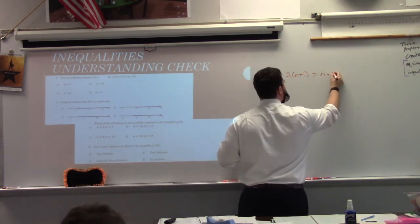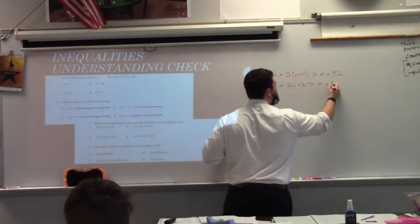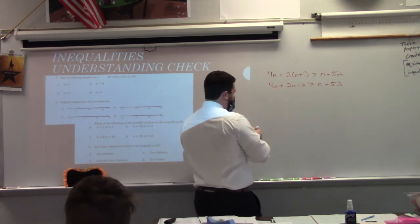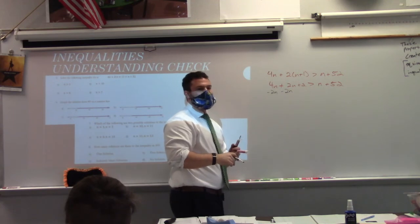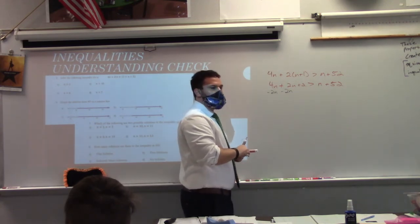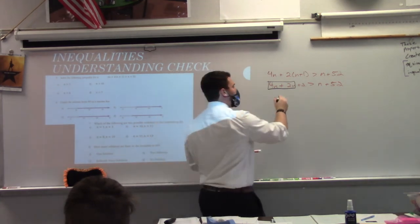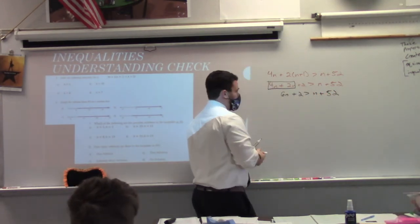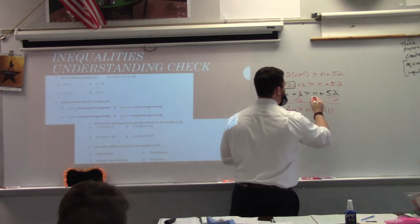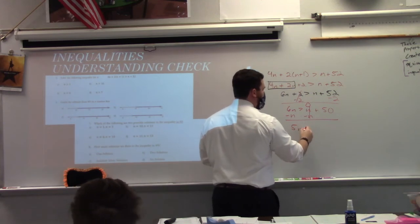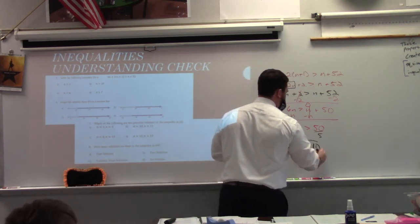If you missed number 5, write this down. When looking at 4N plus 2N, a lot of students tried to subtract 2N from both sides — but you don't need to do that. The 4N and 2N are already together: 4N plus 2N is 6N. Then 6N is greater than... eventually N is greater than 10.